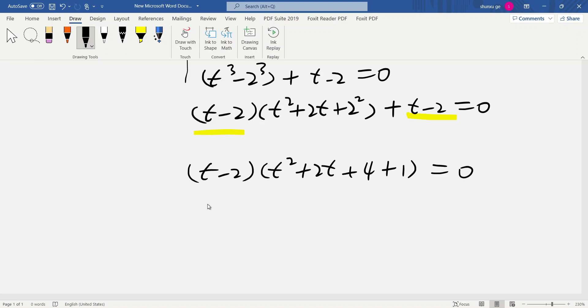So t = 2. t - 2 = 0, so t = 2. t^2 + 2t + 5 = 0. This is one solution.